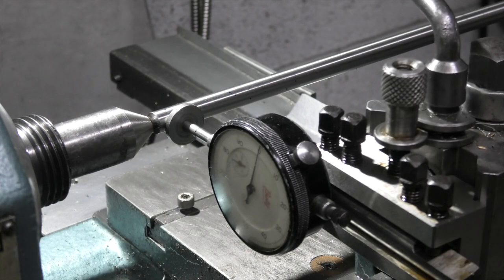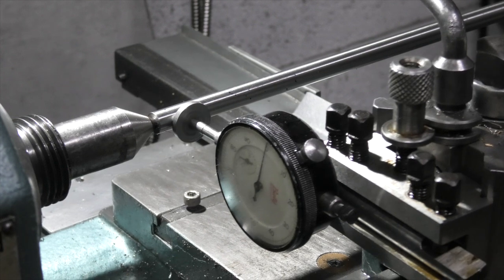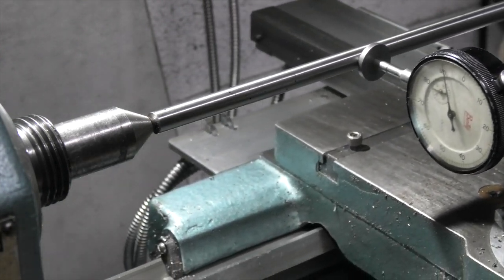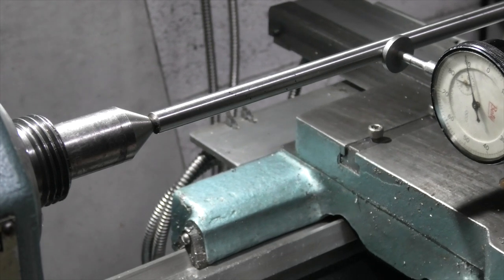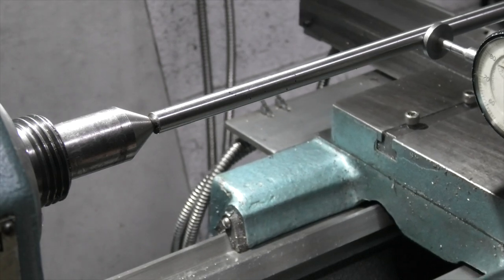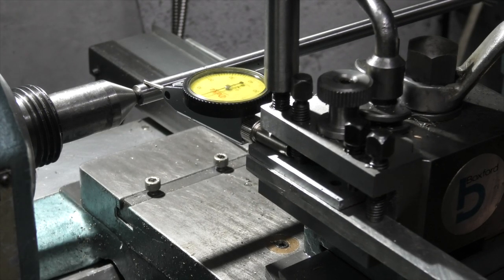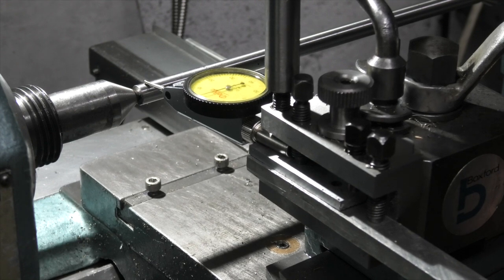Set the dial indicator to zero there. Wind it back down. So over that length it's one thou, which is quite good I think. Thou in. So I'm not going to try and correct that because I can only get worse. I doubt whether I'll get better than that.